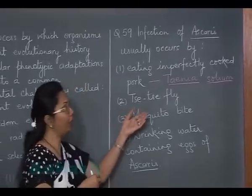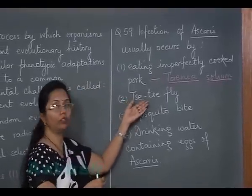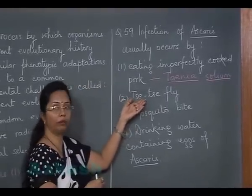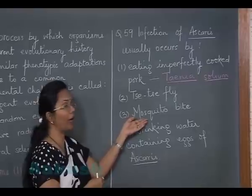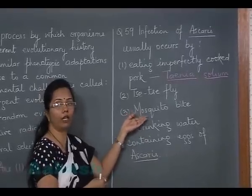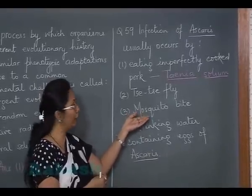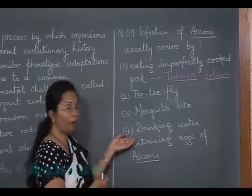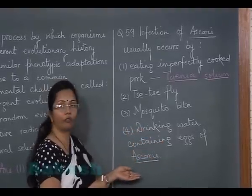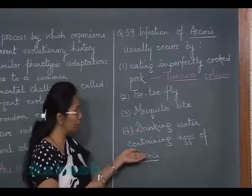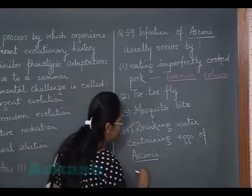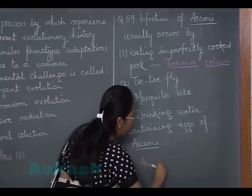The tsetse fly spreads Trypanosoma, causing African sleeping sickness. A mosquito bite can spread malaria, filariasis, and dengue. Option 4 — drinking water containing eggs of Ascaris — is the suitable answer, so the correct answer is option 4.